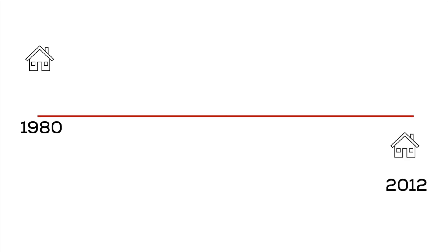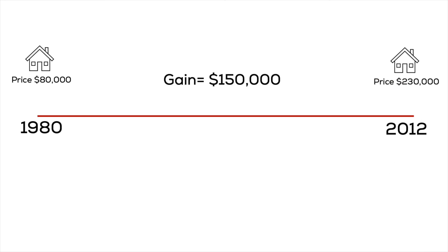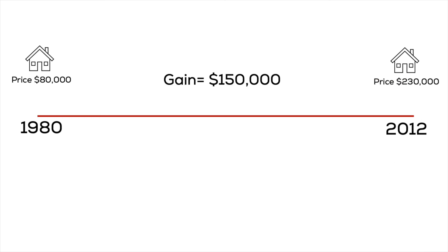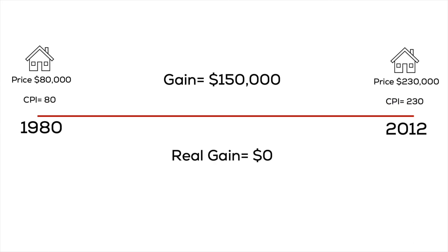For example, if you buy a house in 1980 for $80,000 and sell it in 2012 for $230,000, the capital gain is $150,000 and you pay taxes on that amount. However, during the same period the CPI rose from 80 to 230, meaning the real value of the house is the same — the real gain is actually zero. These costs illustrate why inflation can be troublesome for the economy and individuals.